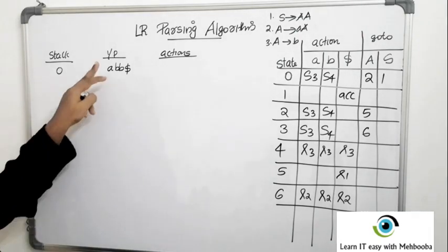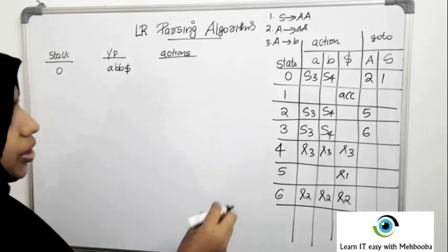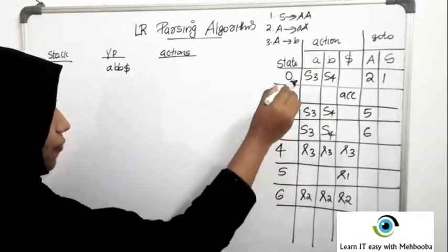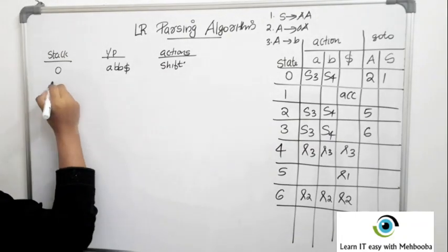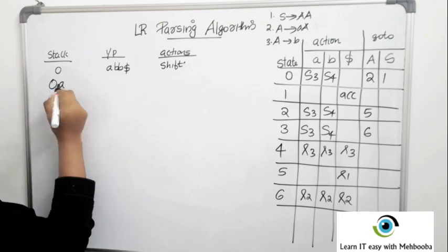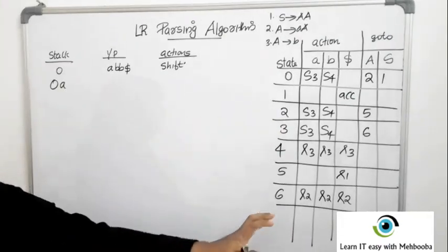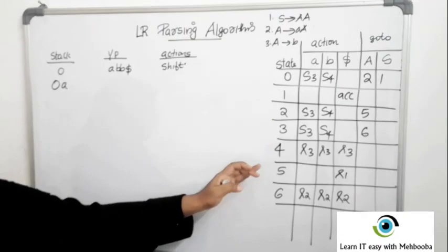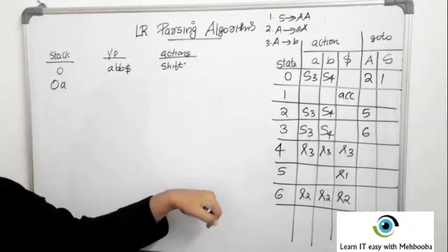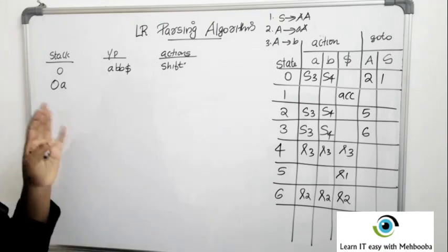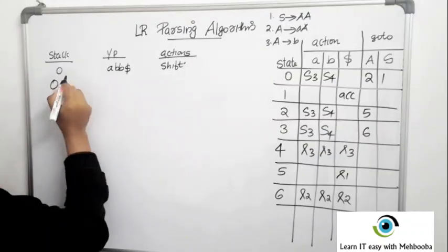Zero is the initial state on the stack. We have the input ABB$. Zero is on the stack and the current input is A, so check row zero and column A. You have S3. S stands for shift, so you shift A and also push state number 3 onto the stack. In this table all numbers are state numbers except those with suffix R — the R suffix indicates production numbers, as seen in the previous video.